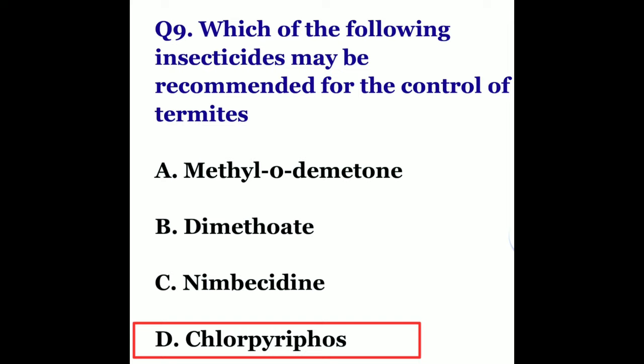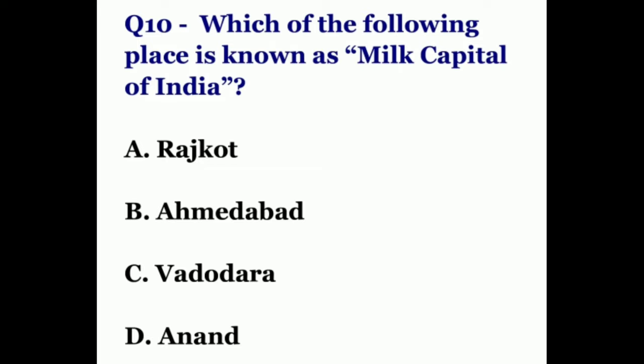Chlorpyrifos is an organophosphate insecticide. Acaricides and miticides are used to control foliage and soil-borne insect pests on a variety of food and feed crops. It is also the active ingredient in insecticides formulated to control ants, spiders, ticks, lice, fleas, and locusts.